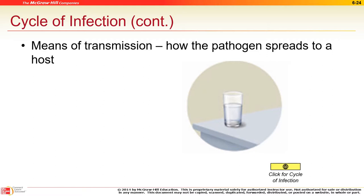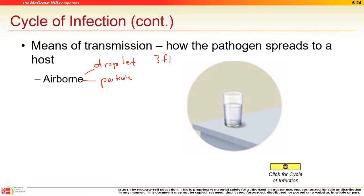Means of transmission: an inanimate object is a fomite; a living carrier is a vector. Airborne transmission has two types: droplets and particulate matter. Droplet precaution applies within three feet of the patient — you'll need additional PPE. Particulate matter — for example tuberculosis — requires a HEPA mask, not just a regular exam mask. Particulate is far more dangerous than droplet because it stays in the air much longer.